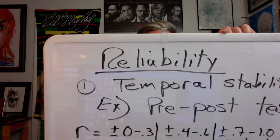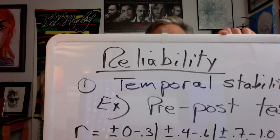Temporal stability is what we just talked about, and it's typically assessed with a pre-post design. There are other ways of determining reliability as well — there's also internal consistency, which can be done with split-half and also inter-item consistency, and I talk about those in another video.